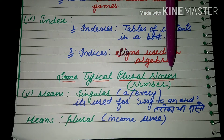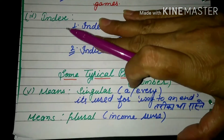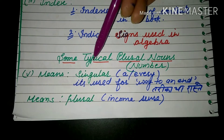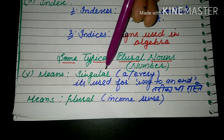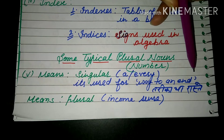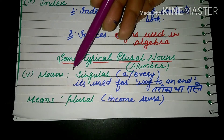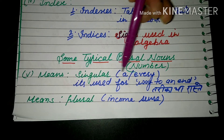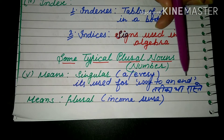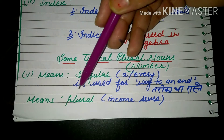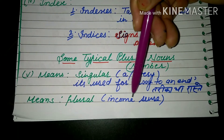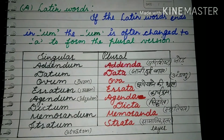Some typical plural nouns — let us see. In number sense: 'means'. The first noun is 'means', which you have to use in both singular and plural. If you want to use it in the singular, you put 'a' or 'every' before it — it means a way to an end, that is, a method or path. When 'means' is used in the plural sense, it means income.